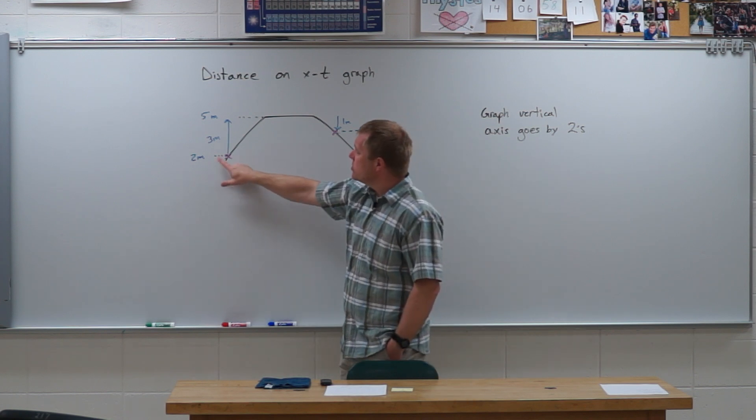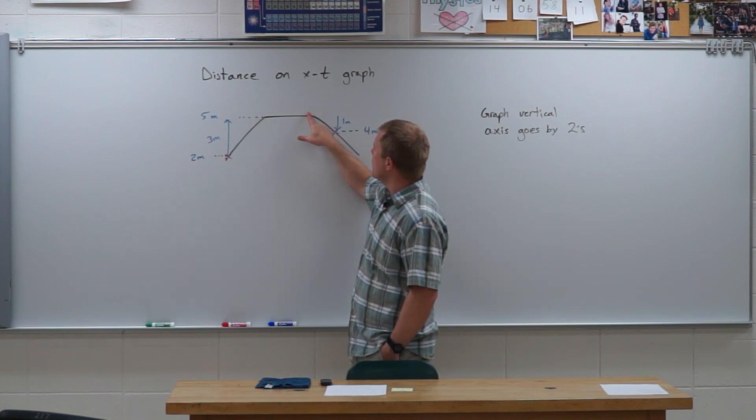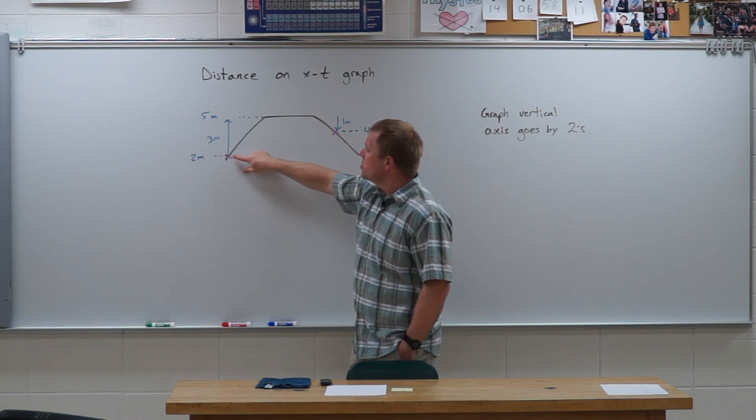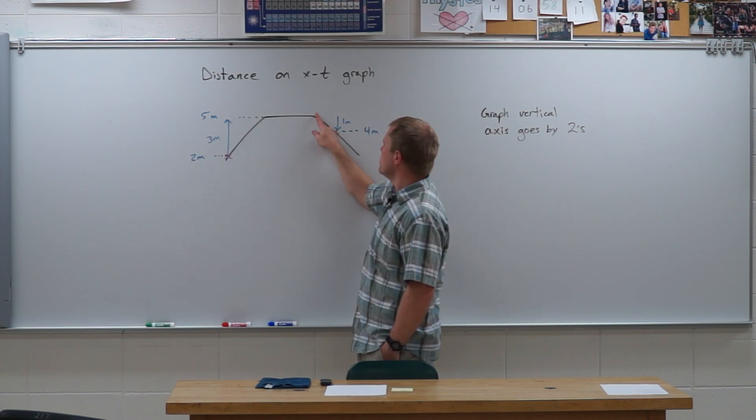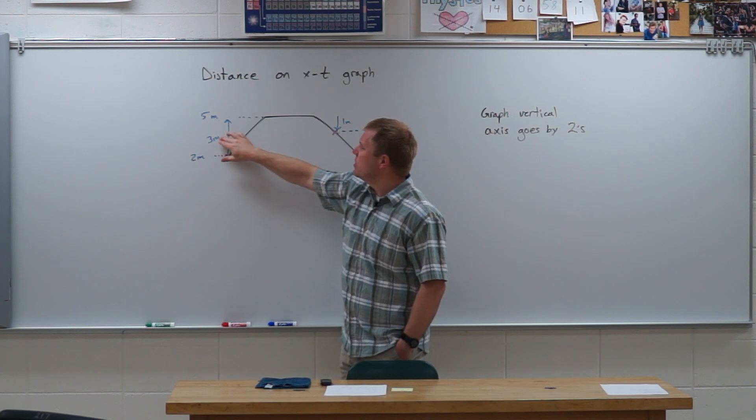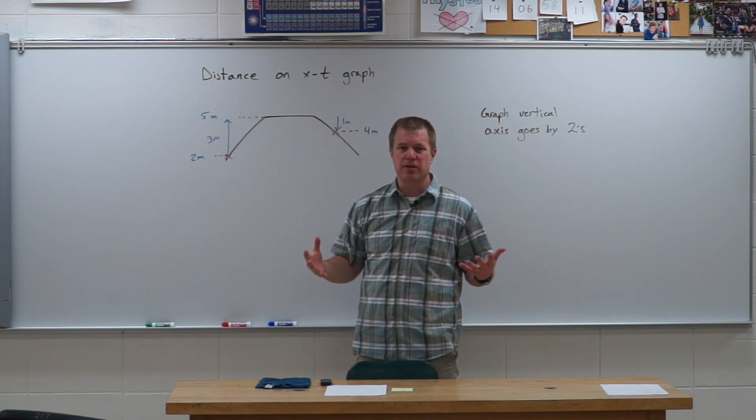So from 2 meters, we're going to go up to 5 then come back down to 4. So on the way out we went 3 meters and on the way back we went 1 meter. So we went a total of 4 meters would be our distance.